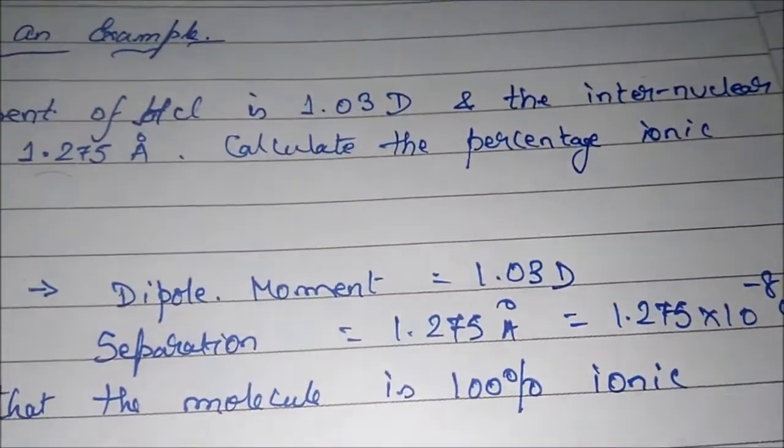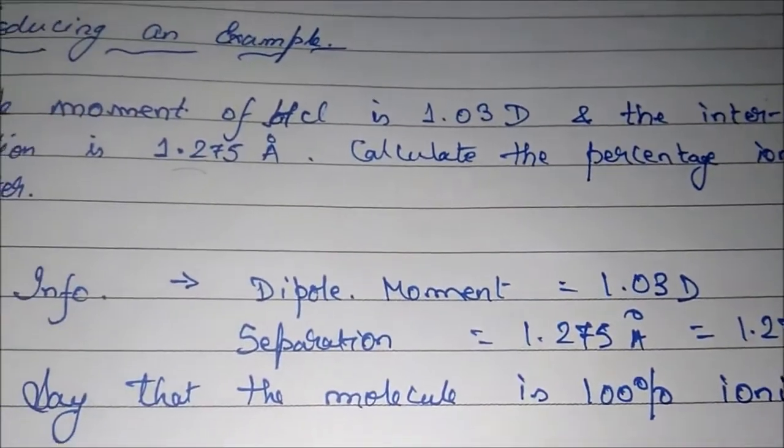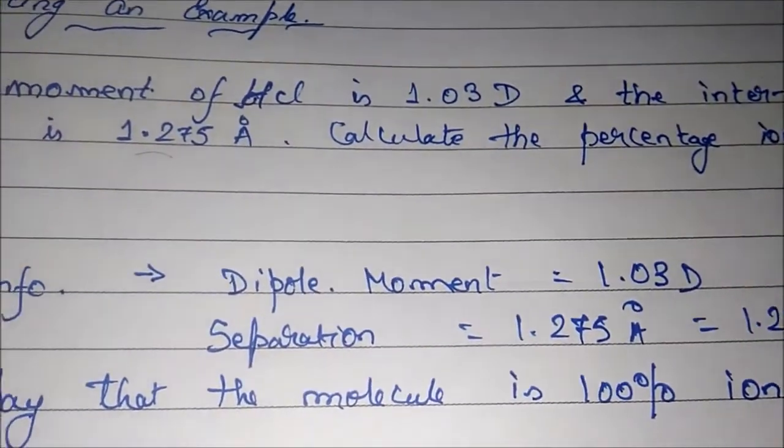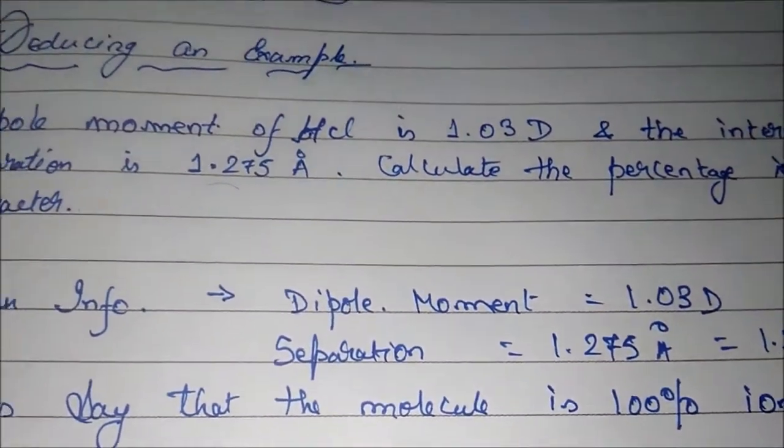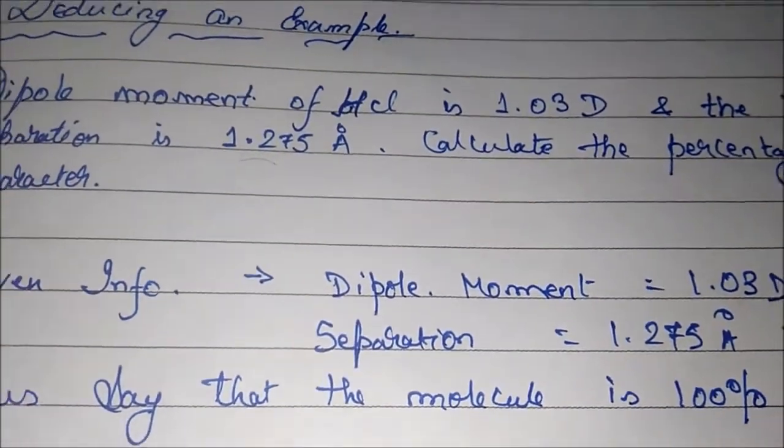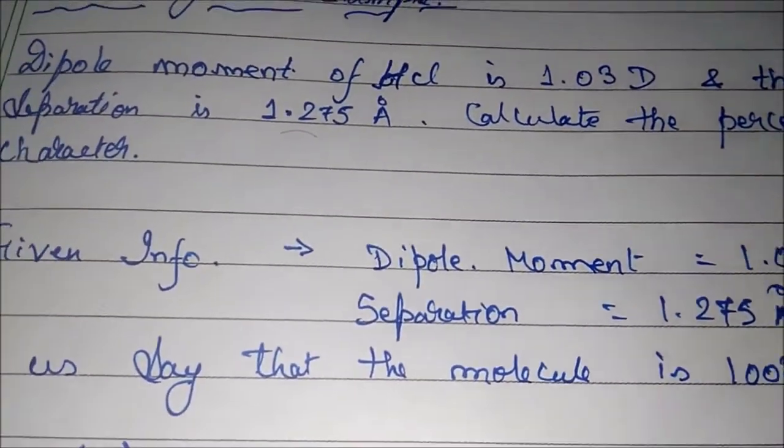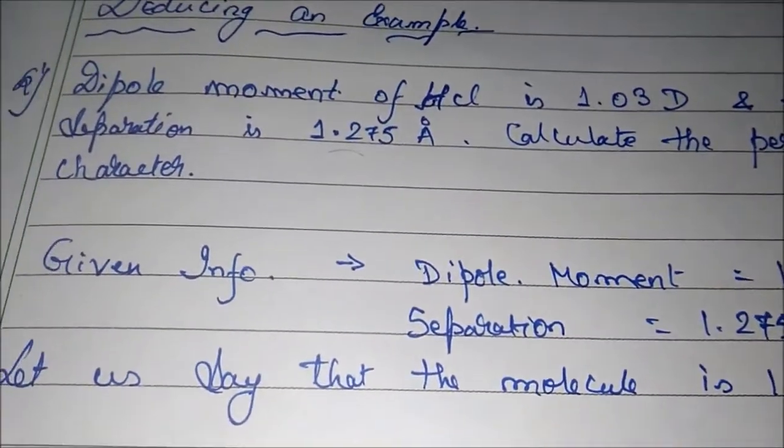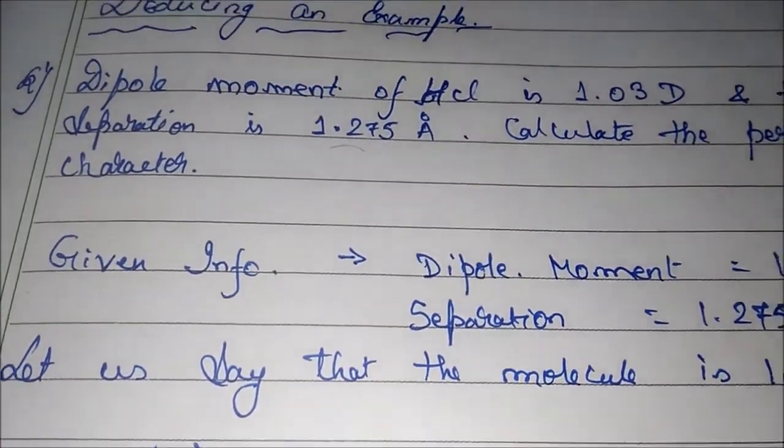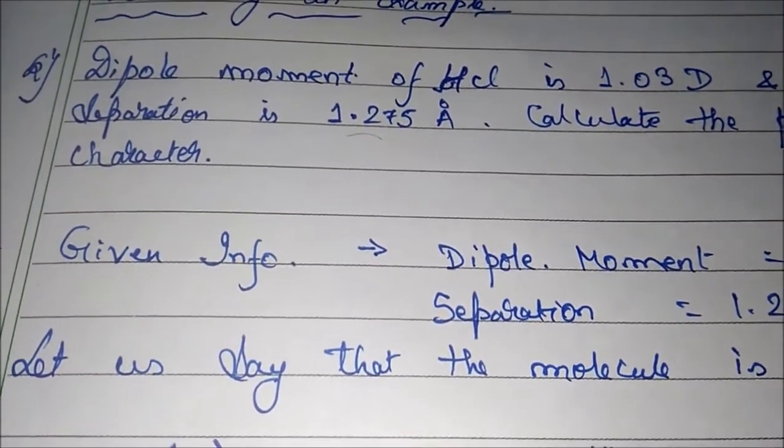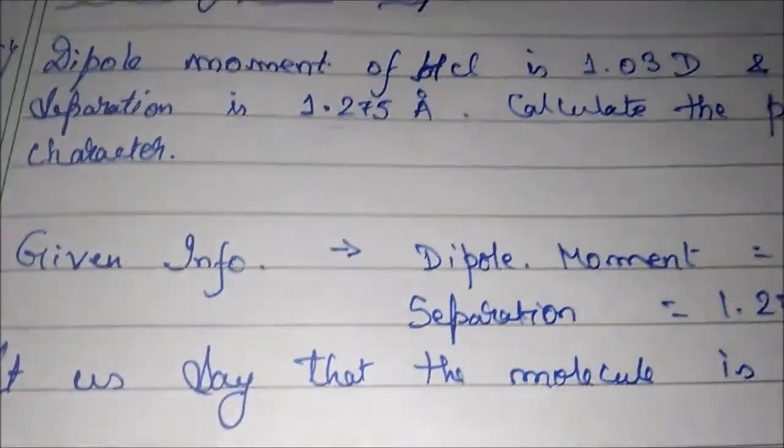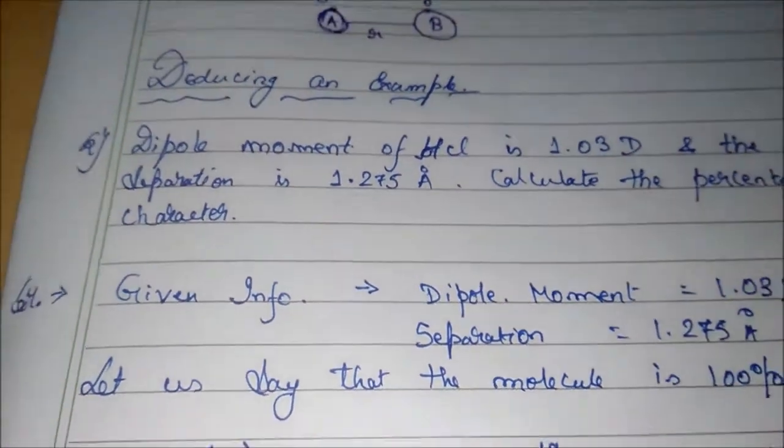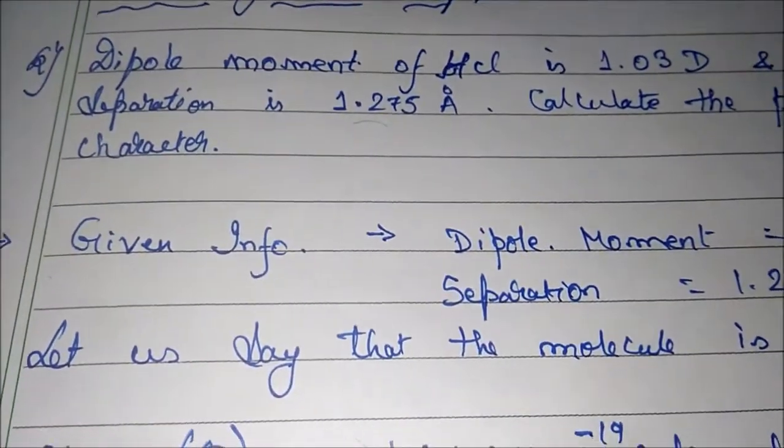The first assumption that we have to make here is: let us say that the molecule is 100% ionic. This is theoretically possible, but in practical life, this is never possible. No molecule is 100% ionic and no molecule is 100% covalent. There is always some part which is covalent for an ionic molecule, and vice versa. So every molecule possesses both ionic and covalent character.